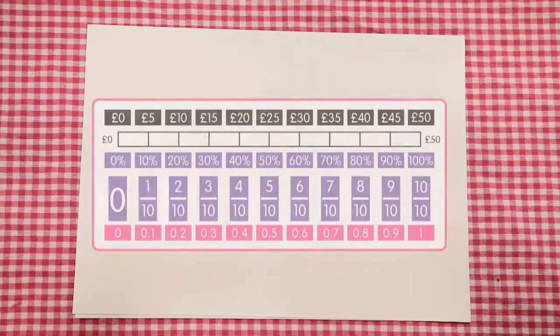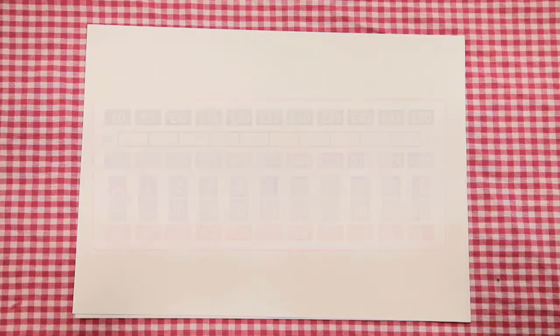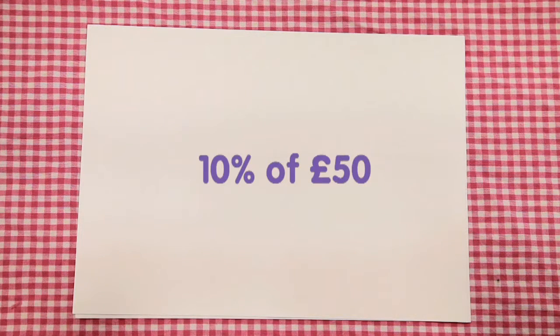We can do this using the number strip by splitting 50 pounds into 10 equal parts. If the whole strip is 100%, then one part is 10%. 10% of 50 pounds equals 5 pounds.